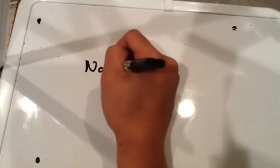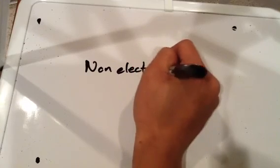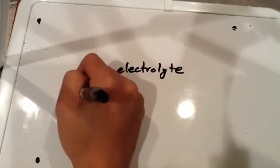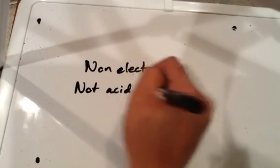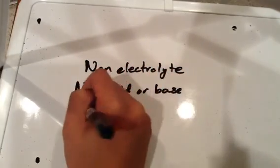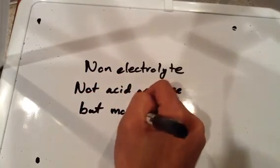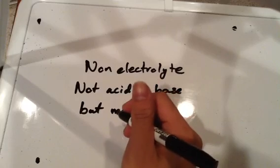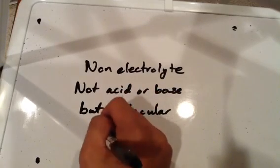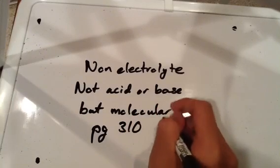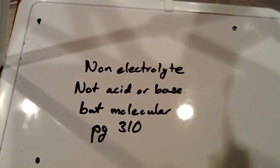So if it's molecular, and you've already ruled out that it's not a base, it's not an acid, well, chances are it's probably a non-electrolyte. So basically, if not acid or base, but molecular. Here's a pretty good chart on page 310 that will basically give you a step-by-step hierarchy of how you should be looking at this in order to determine if it's going to be a strong or weak electrolyte.